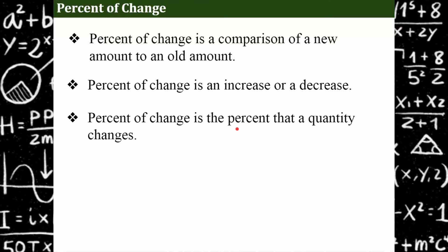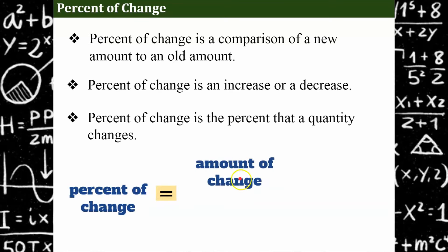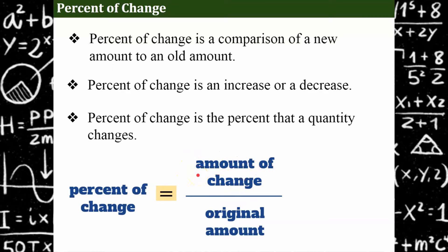Percent of change is represented with a percent — a quantity that a quantity changes by. You're saying it's increased by 5% or decreased by 5%. Percent of change equals the amount that something has changed, divided by the original amount. Your amount of change is always going to be positive. Multiply by 100 to create a percent, and in your answer use the word increase or decrease rather than a negative amount. You would never say negative 2% — say decrease of 2% instead.